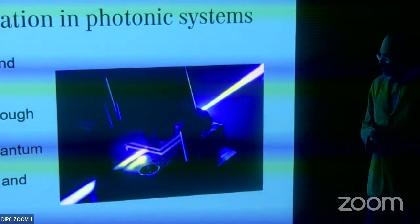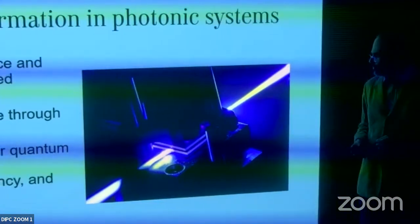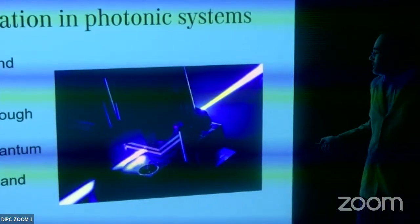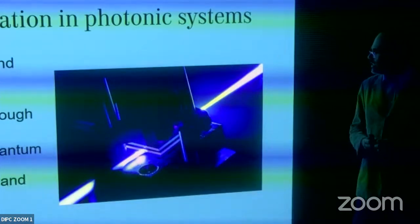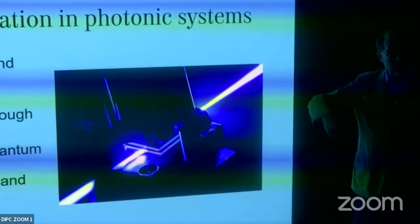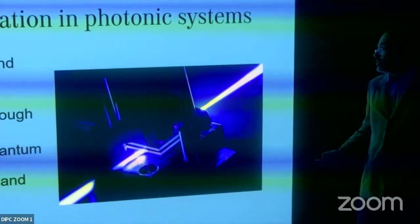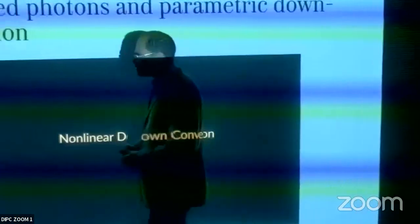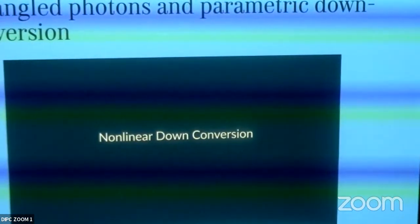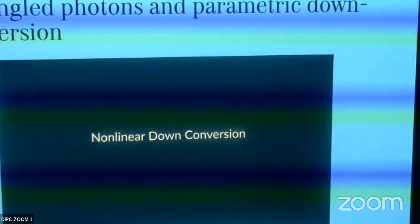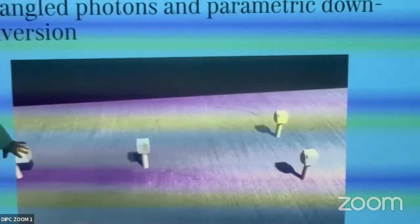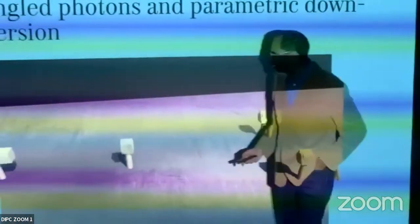In the lab we produce entangled twin photons. They are quantum-correlated, can propagate through optical fibers to distant parts, and we can control their quantum state through many degrees of freedom. I'll show a small video of how they're produced in the crystal.